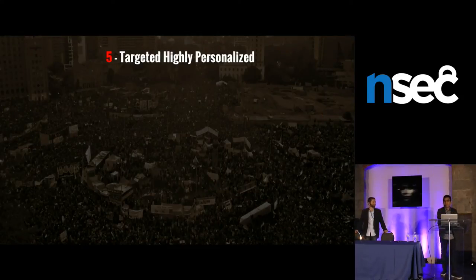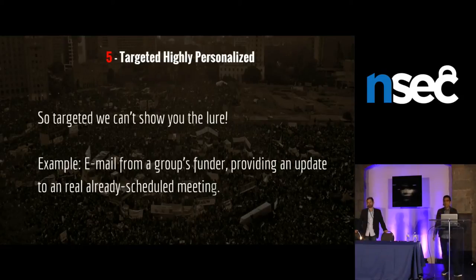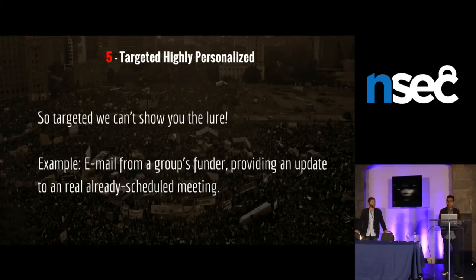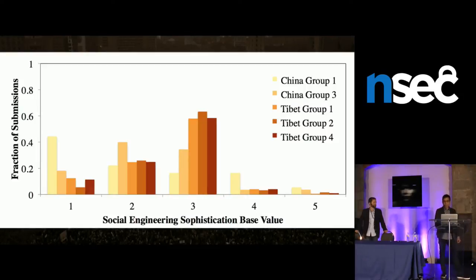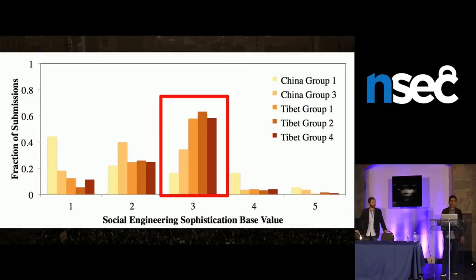That's a four. A five is targeted and highly personalized — so personalized we can't ethically show you a real example. Here's a little story: you're an NGO and you get an email from your actual funder and the actual program officer saying, 'I have an important update for a meeting two weeks from now,' which is a real meeting already scheduled. I would probably click that. Across our dataset, we saw a lot of threes, some fours and fives, but the majority were threes — meaning a lot of effort is being done to make these emails seem legitimate.